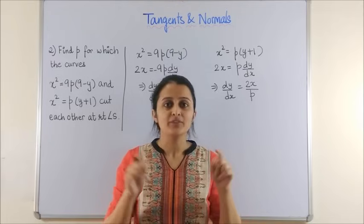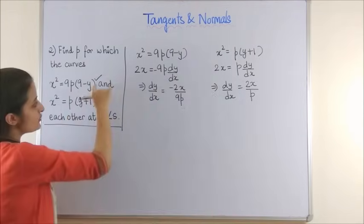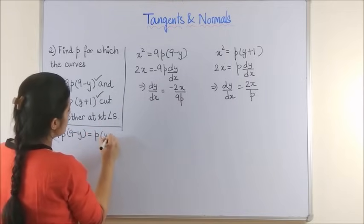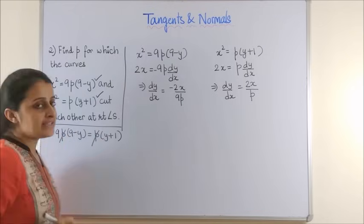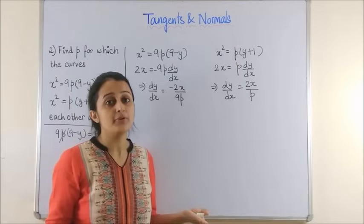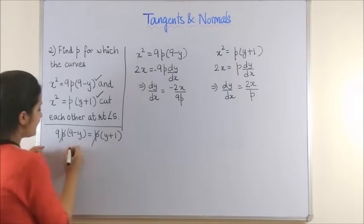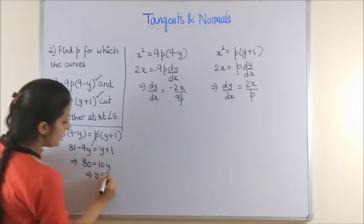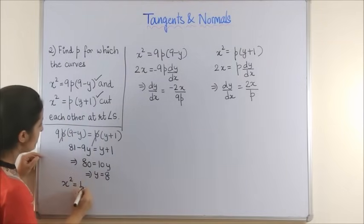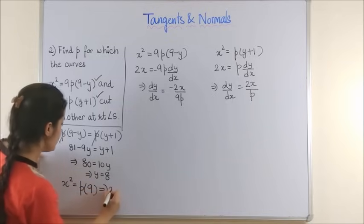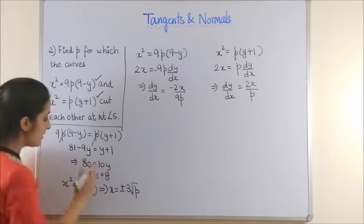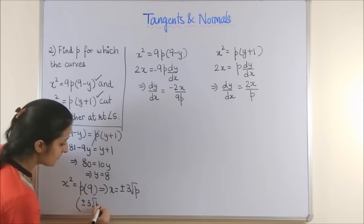Let's find the point of contact, which is the point of intersection of the two curves. Solving simultaneously gives 9p(9 − y) = p(y + 1). Cancelling p (since p ≠ 0, otherwise the curves become x² = 0 and the question has no meaning), we get y = 8. Substituting y = 8 into the second curve gives x² = 9p, so x = ±3√p. The two points of intersection are (±3√p, 8).